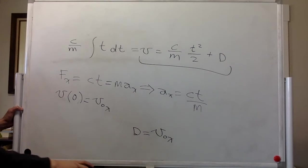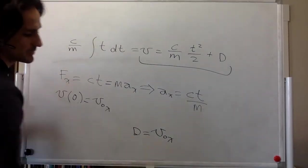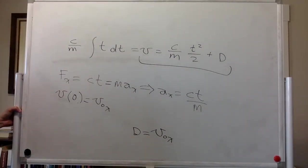And so from this equation, we get that d, that constant of integration, is v naught x.